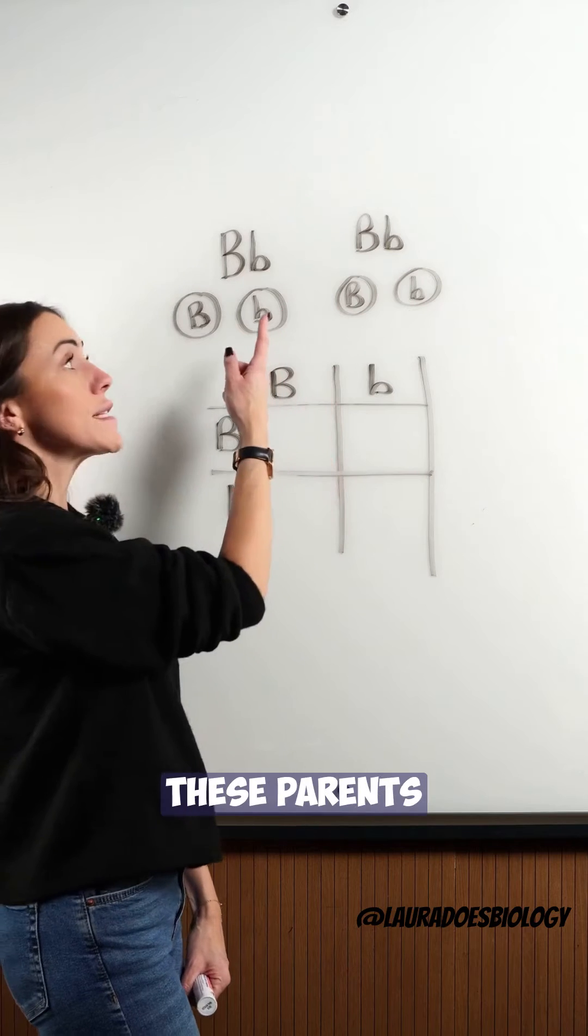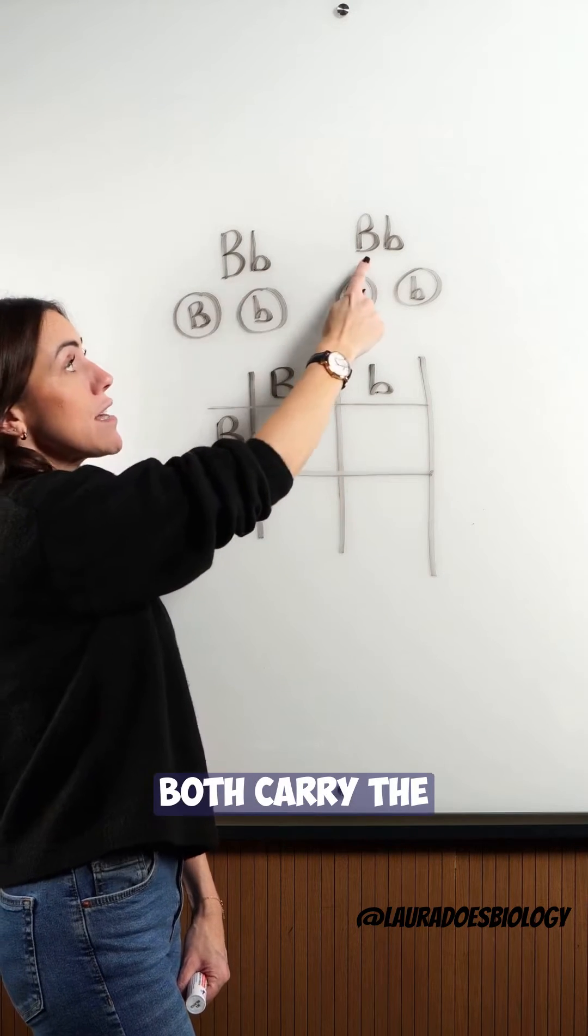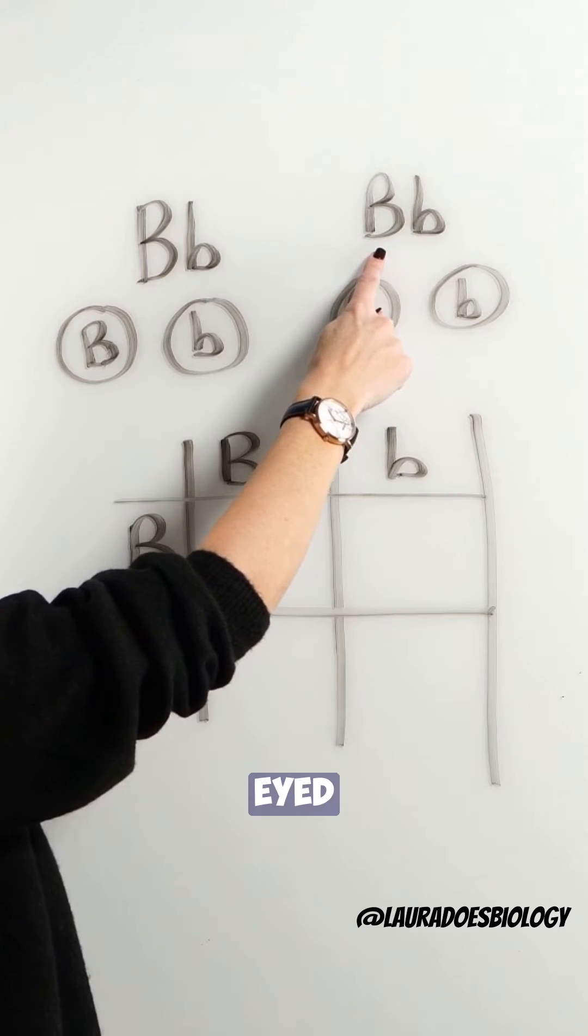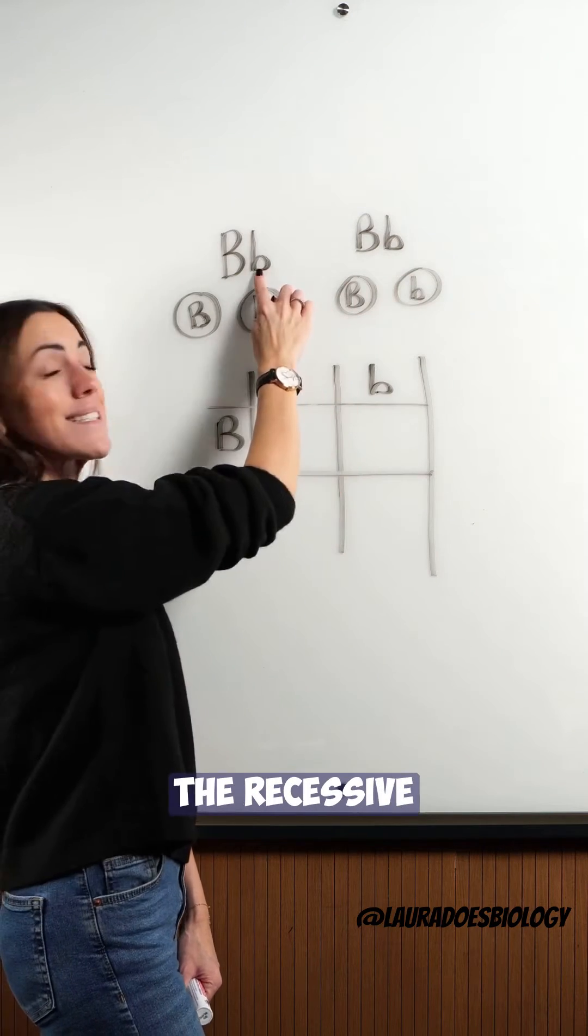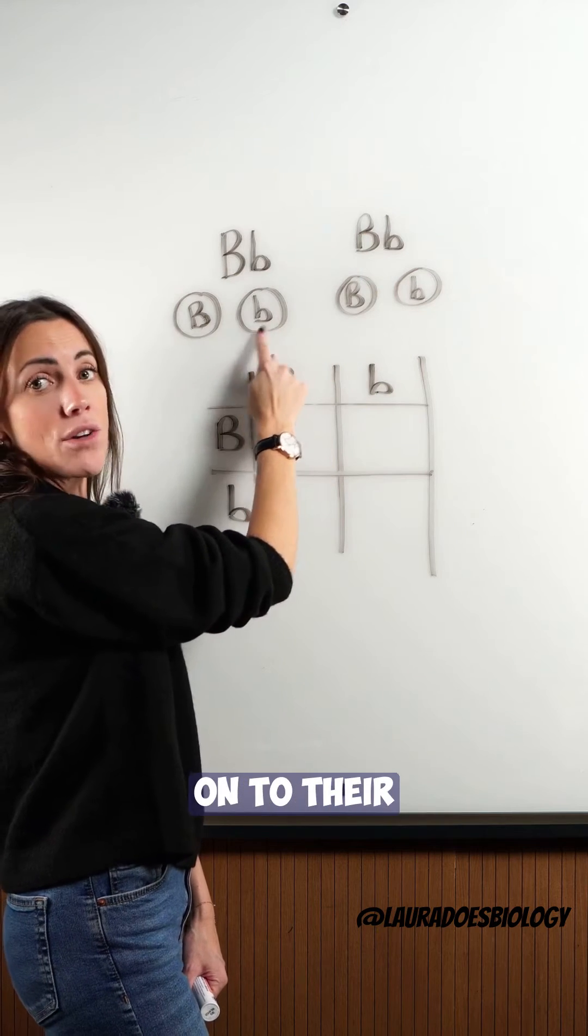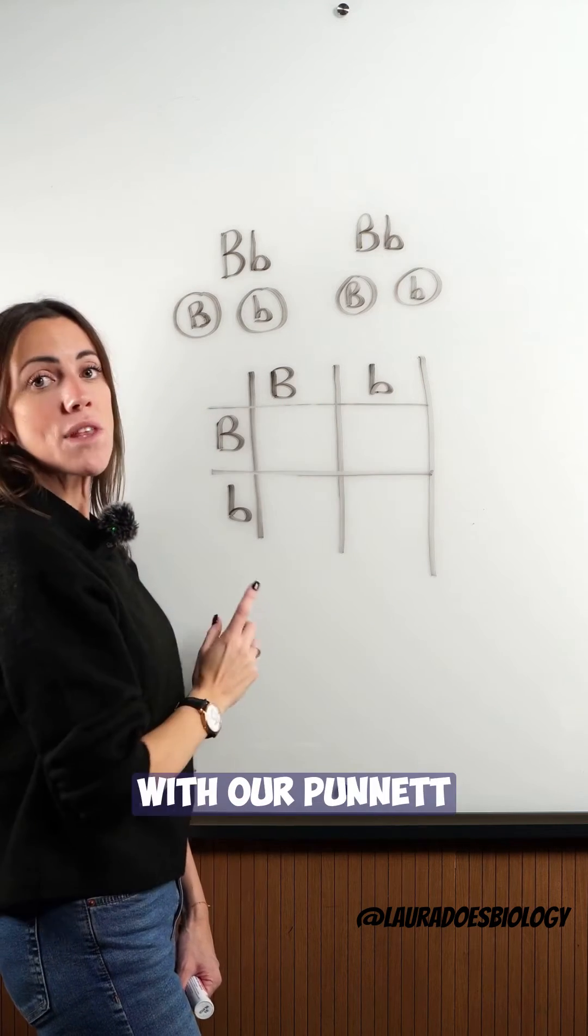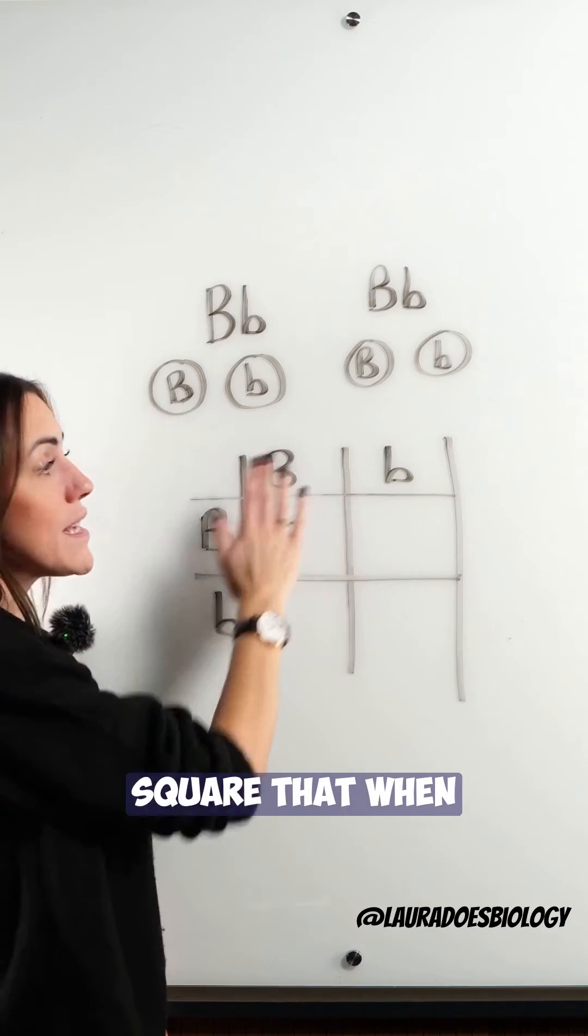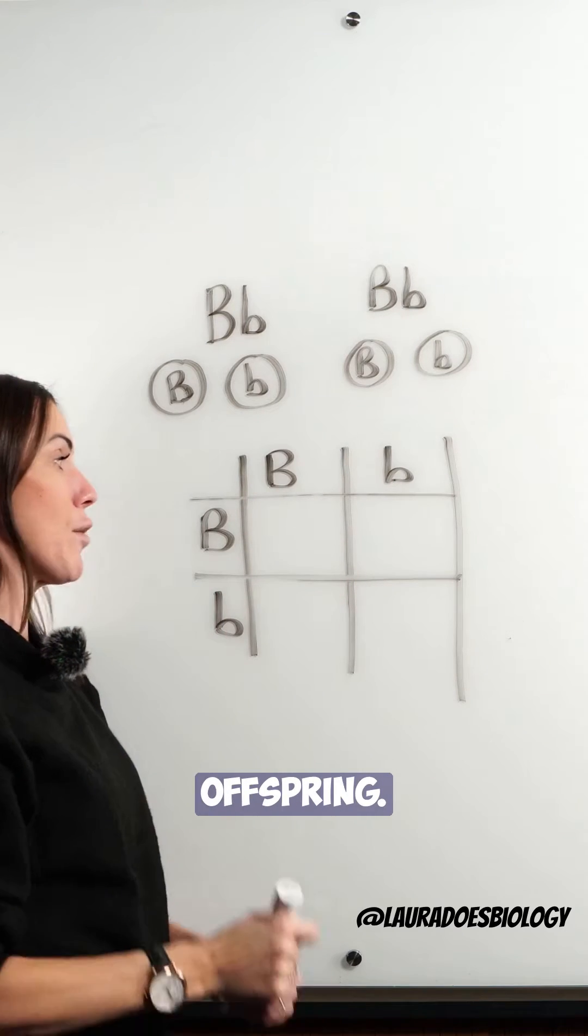So both of these parents have brown eyes. That's because they both carry the dominant brown-eyed allele, but they are also carrying the recessive blue-eyed allele which they have passed on to their gametes or sex cells. You can see with our Punnett square that when these two parents reproduce, there are four possible options for their offspring.